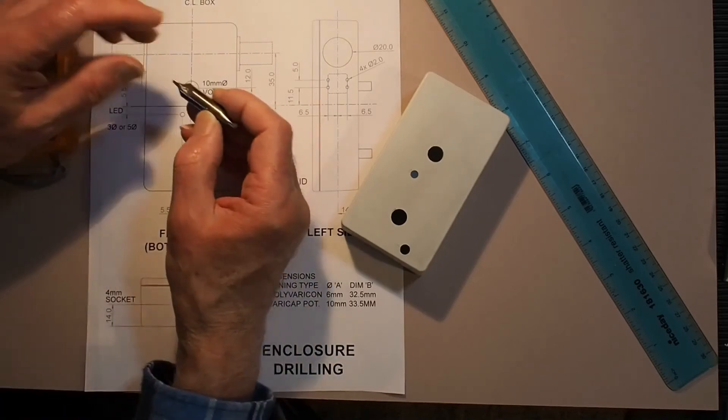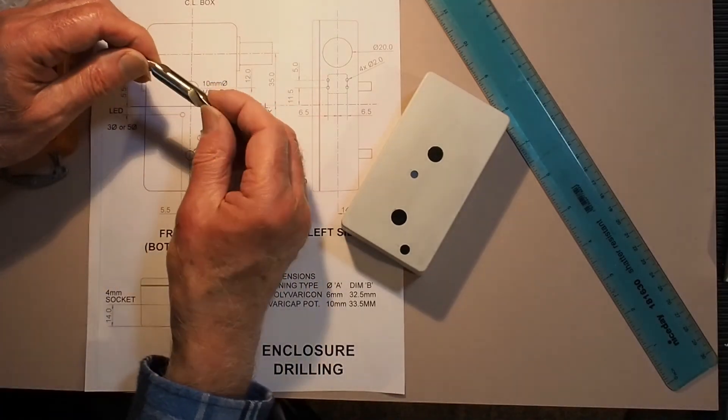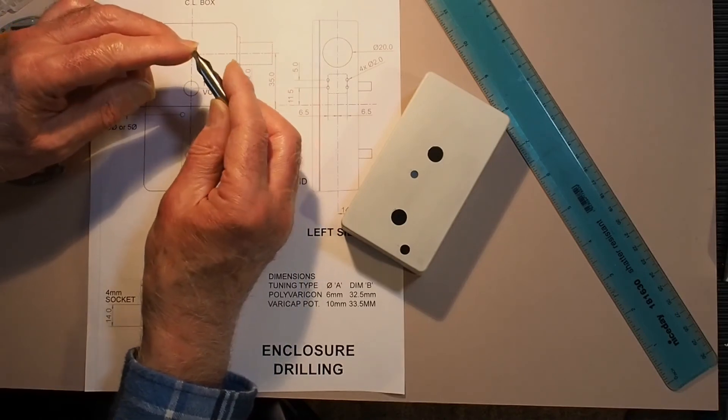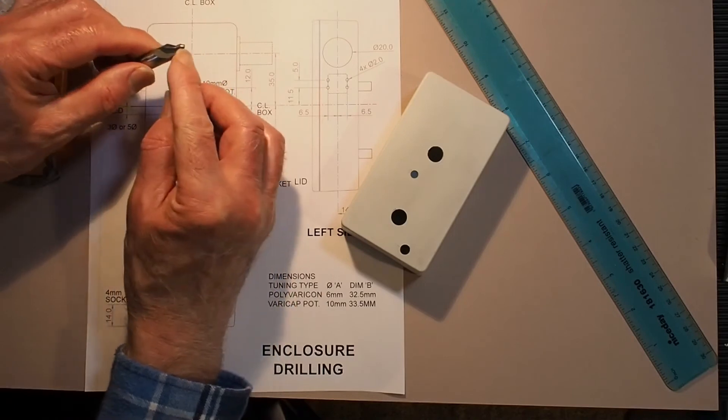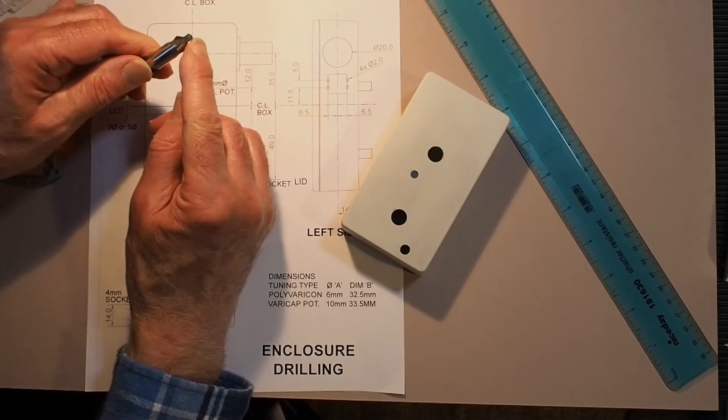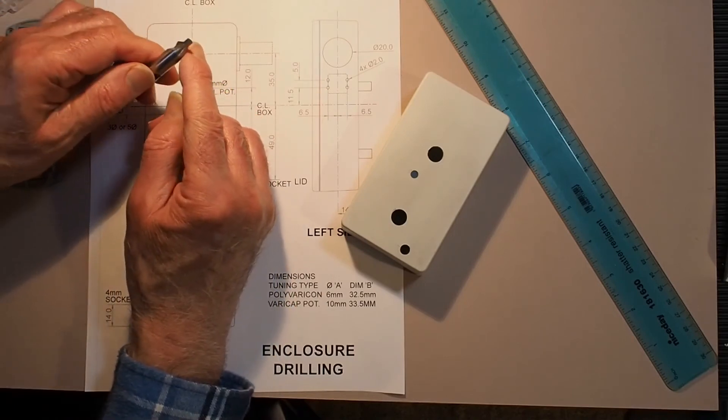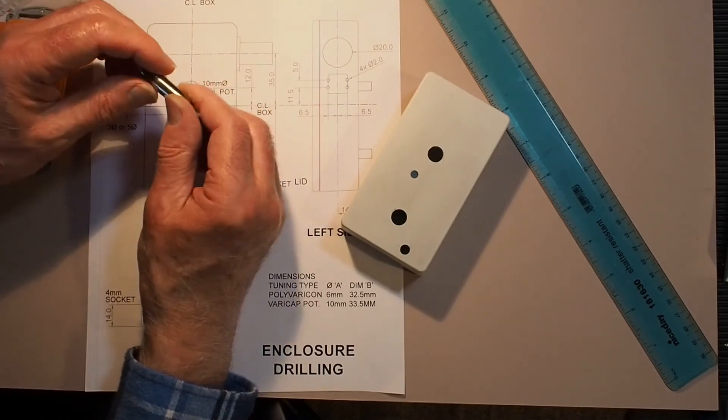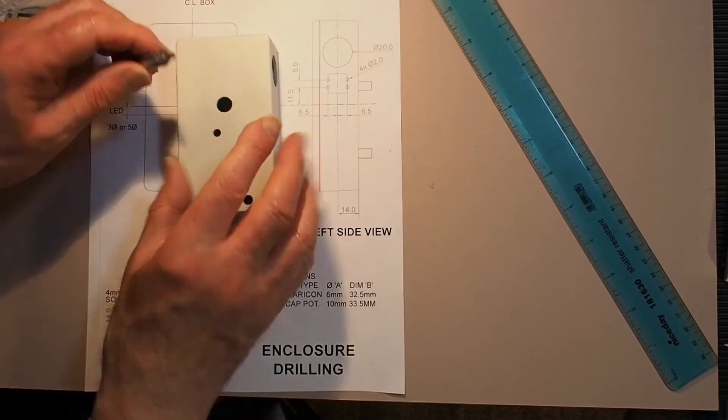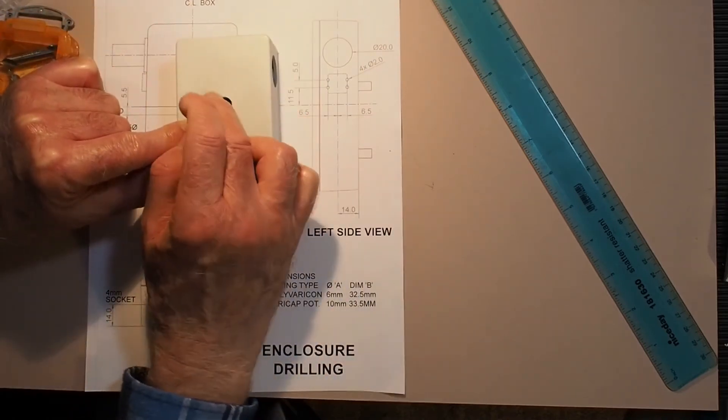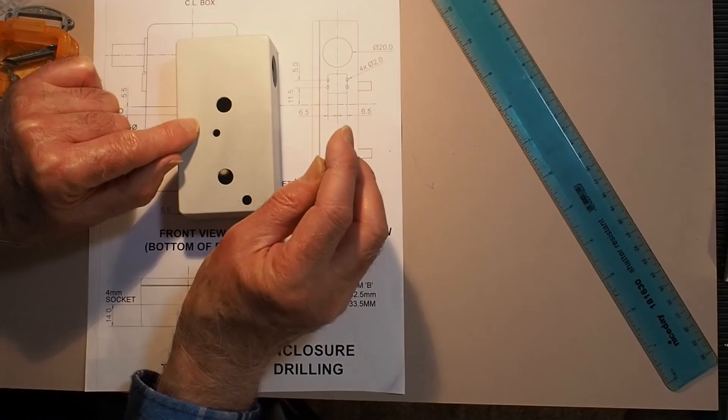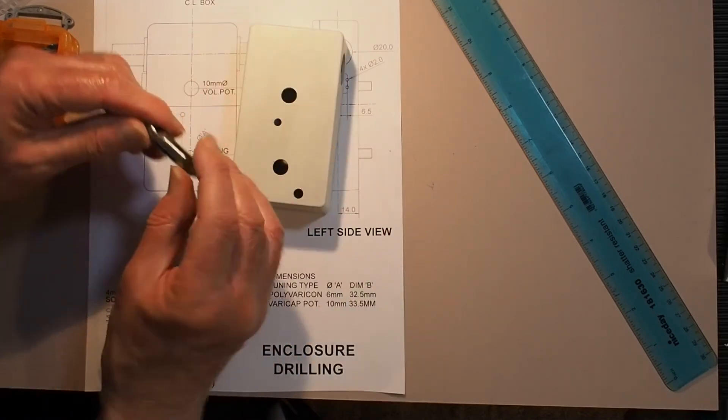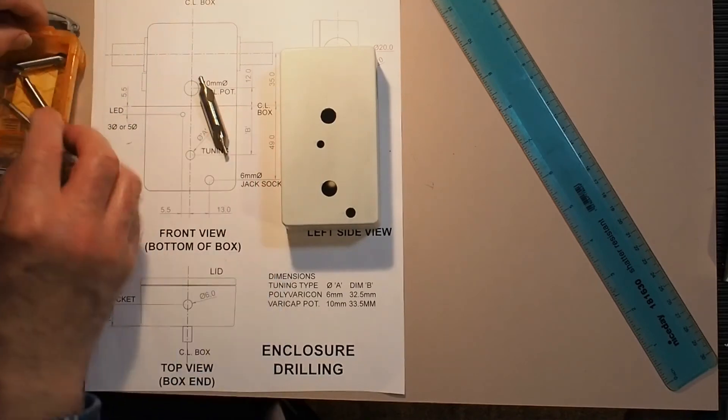They're called center drills and they've got a little pilot drill. They're meant to be self-centering. Anyway, they produce a really nice cut through this plastic, much cleaner than you'll get with a wood screw.